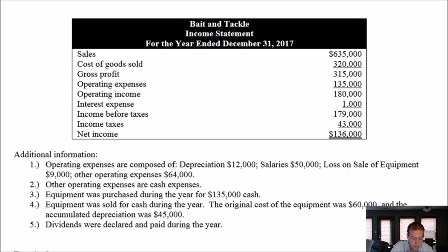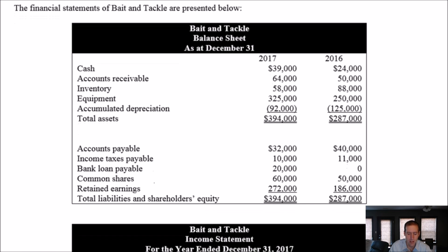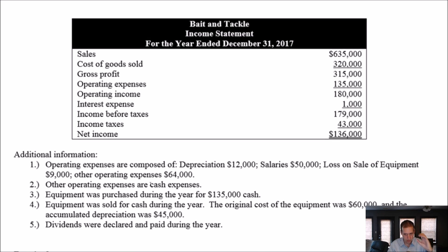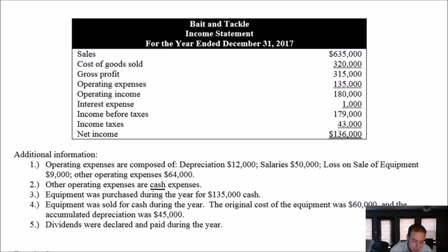They say other operating expenses are cash expenses. In a lot of these cash flow statement problems, they'll have some little notes at the bottom. If you ever read the word 'cash' in the note, you can say, okay, I'm doing a cash flow statement — that's going to come in handy later. So in the back of my mind, my spidey sense is tingling. There's $64,000 of other operating expenses, and they say those are cash expenses — something I'm going to file away.